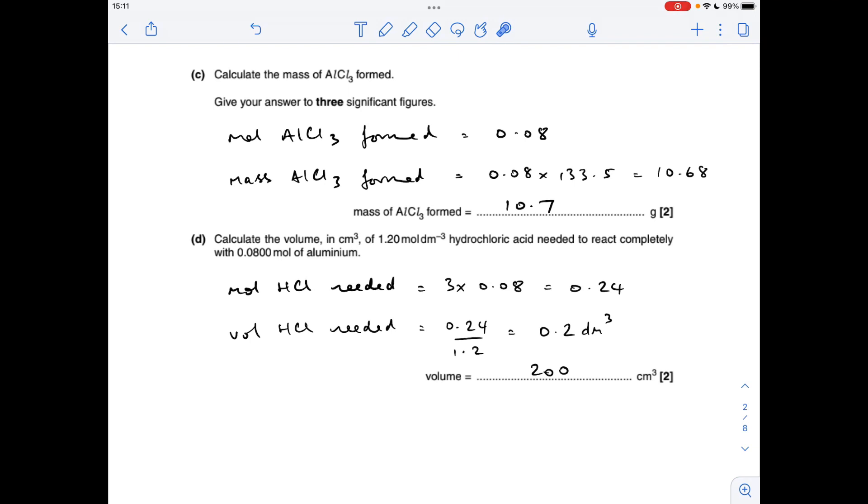And then the last part, the volume in centimetres cubed of the hydrochloric acid needed. The moles of hydrochloric acid needed is going to be three times the moles of aluminium because of the ratio between those two chemicals. So we need 0.24 moles of hydrochloric acid. The volume needed is moles over concentration, which gives us an answer in decimetres cubed. Then we multiply by 1000 and get 200 centimetres cubed.